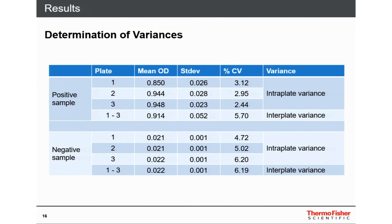To give you an impression of the reproducibility and robustness of this test, I show a slide with the interplate and intraplate variances, which are within a very low percentage range. Determined with positive and negative samples, we had an intraplate variance of about less than 6% and an interplate variance of about 3% on the positive samples. With negative samples it was about 5% and 6%, though with very low OD values.